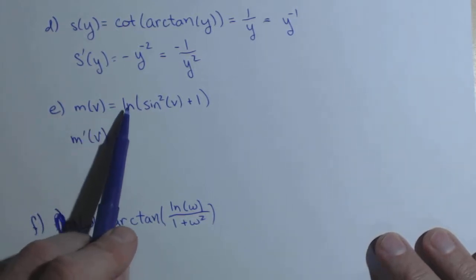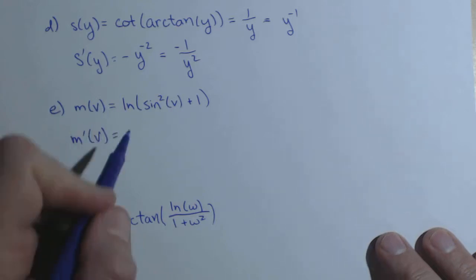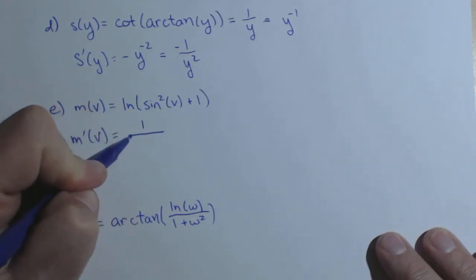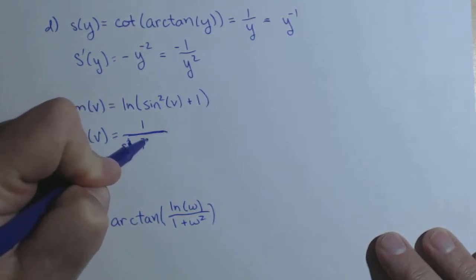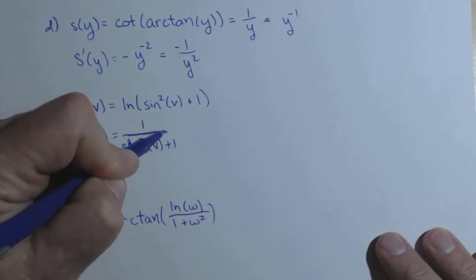M of v, we have a natural log. So for a derivative of a natural log, you always start with one over whatever you're taking the natural log of. So one over sine squared of v plus one in the denominator,